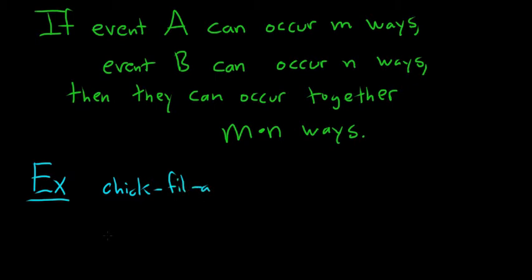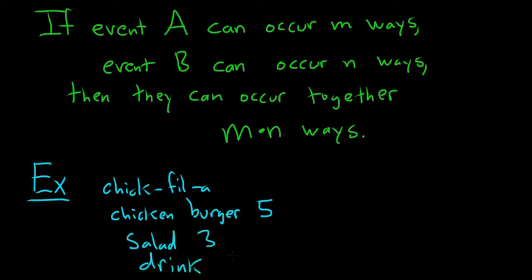Let's say a combo meal here comes with a chicken burger, and there are five choices for a chicken burger. And it comes with a salad, and there are three choices for a salad. And it comes with a drink, and there are four choices for a drink.